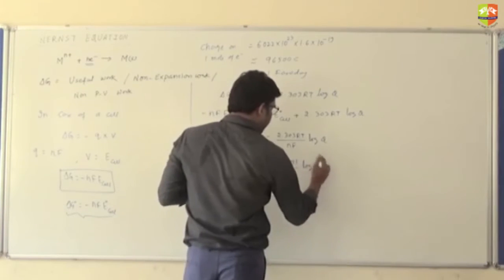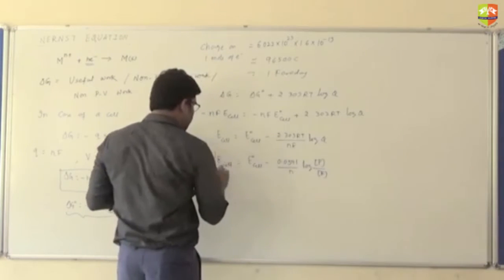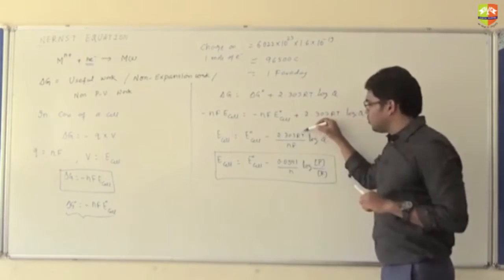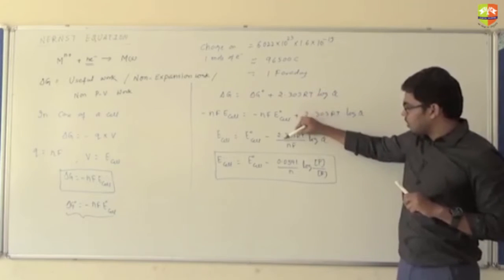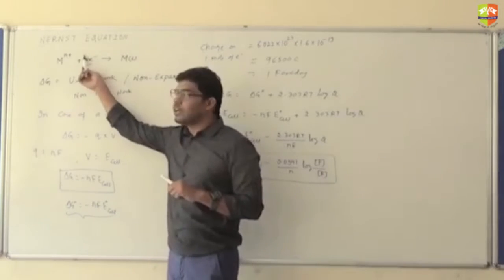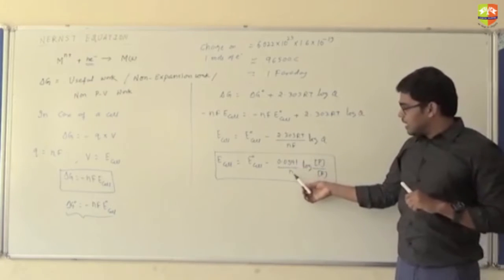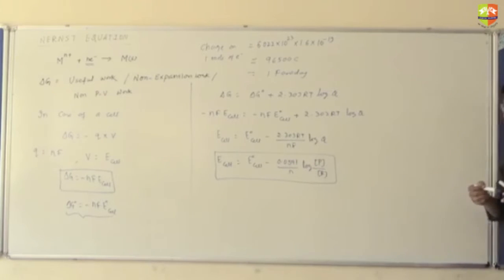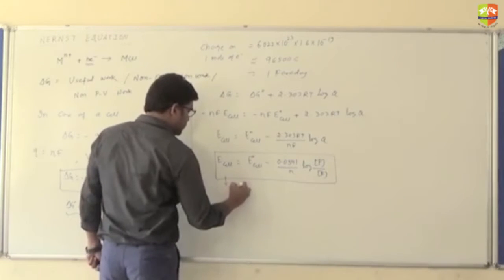Or we can write it as concentration of products by concentration of reactants. This equation is the Nernst equation. When you substitute the values of R, T at 298K, and F as 96500, keeping N out since N is the number of moles of electrons exchanged according to the reaction, you get 0.0591. So this equation is known as the Nernst equation.